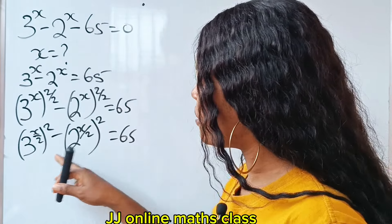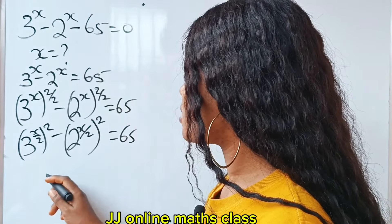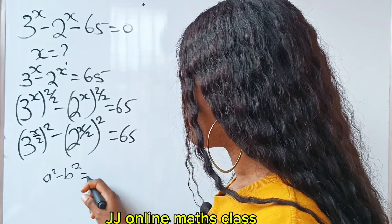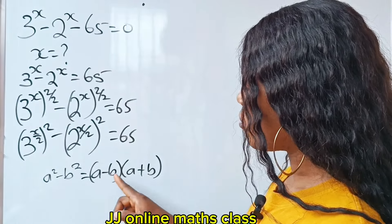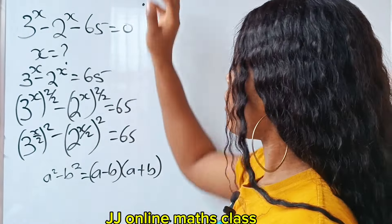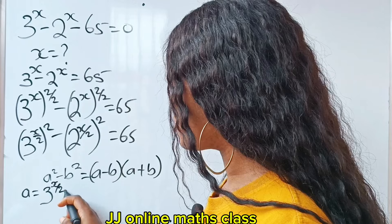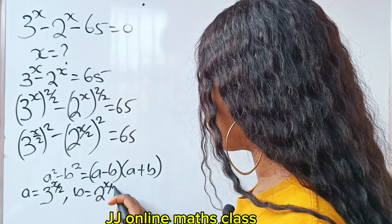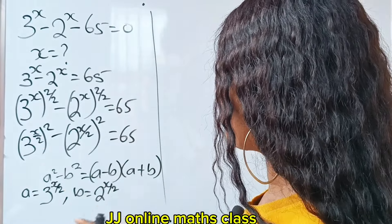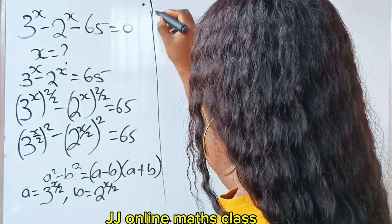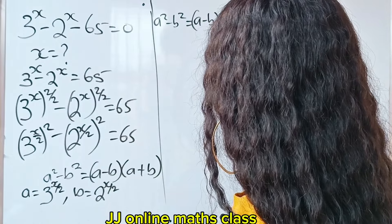Now this is the difference of two squares. The algebraic identity is that a squared minus b squared equals a minus b multiplied by a plus b. In this case, our a is equal to 3 to the power of x over 2, and our b is equal to 2 to the power of x over 2. Let's substitute them into this equation.